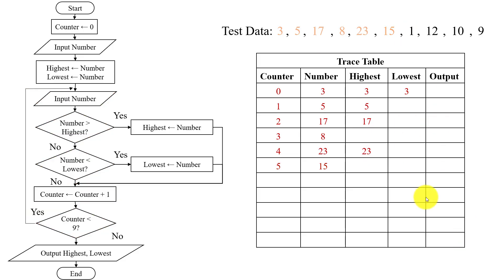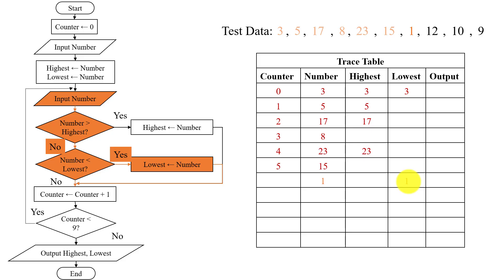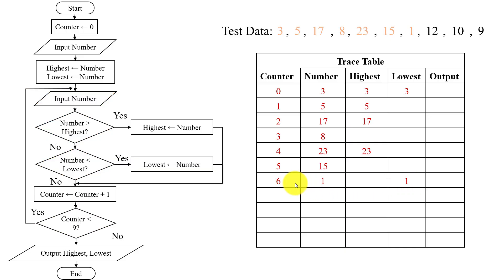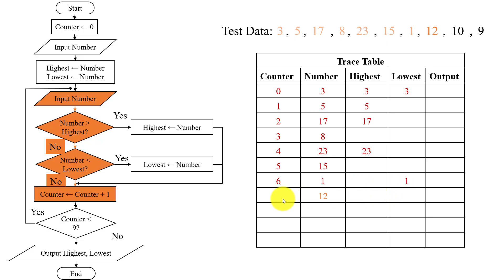5 is less than 9 — yes. Input another number, which is 1. 1 will be placed under the number column. 1 is greater than 23 — no. 1 is less than 1 — no, so lowest remains 1. Increment the counter to 6. Then input 12: 12 is greater than 23 — no. 12 is less than 1 — no. Increment the counter and it will be 7.